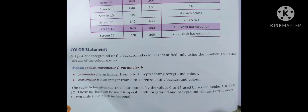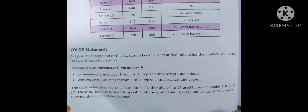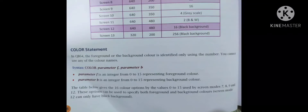Parameter F is an integer from 0 to 15 representing the foreground color. Parameter B is an integer from 0 to 15 representing the background color. The table gives 16 color options by values 0 to 15, used by screen modes 7, 8, 9, and 12. Screen mode 12 can only have a black background.